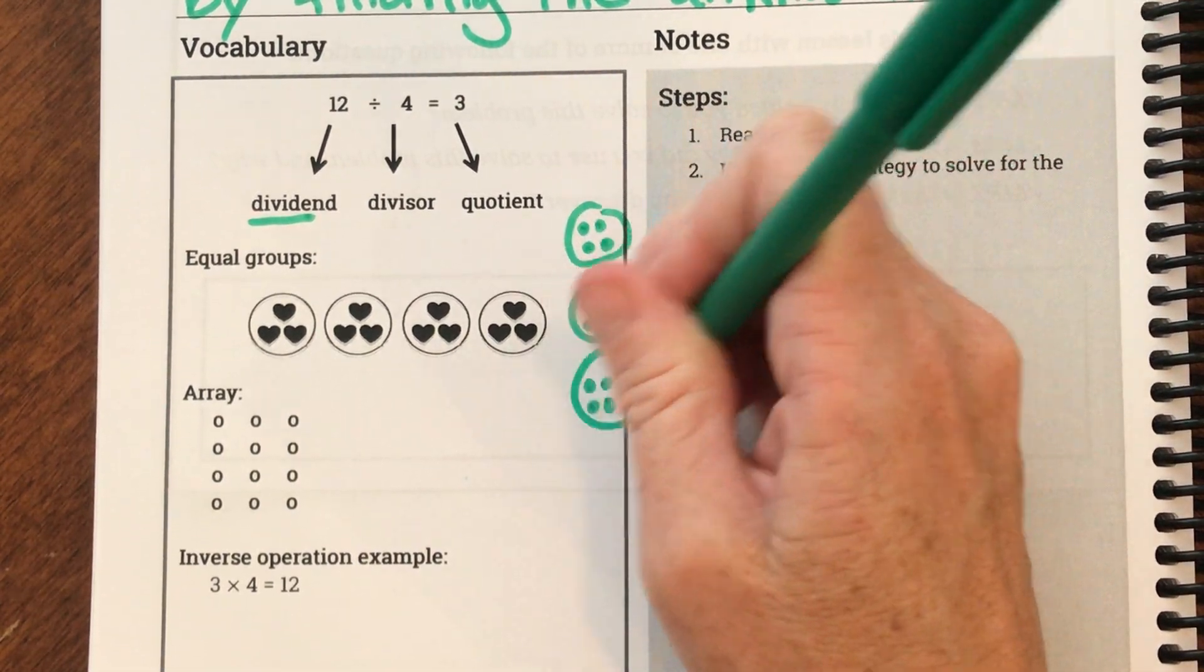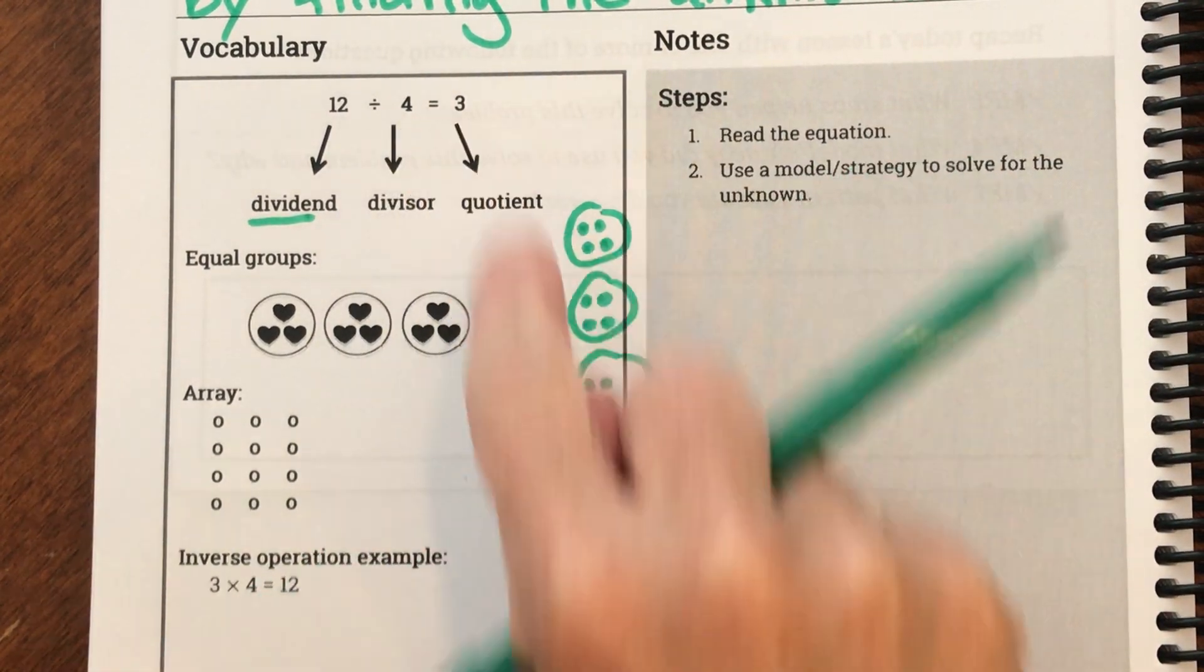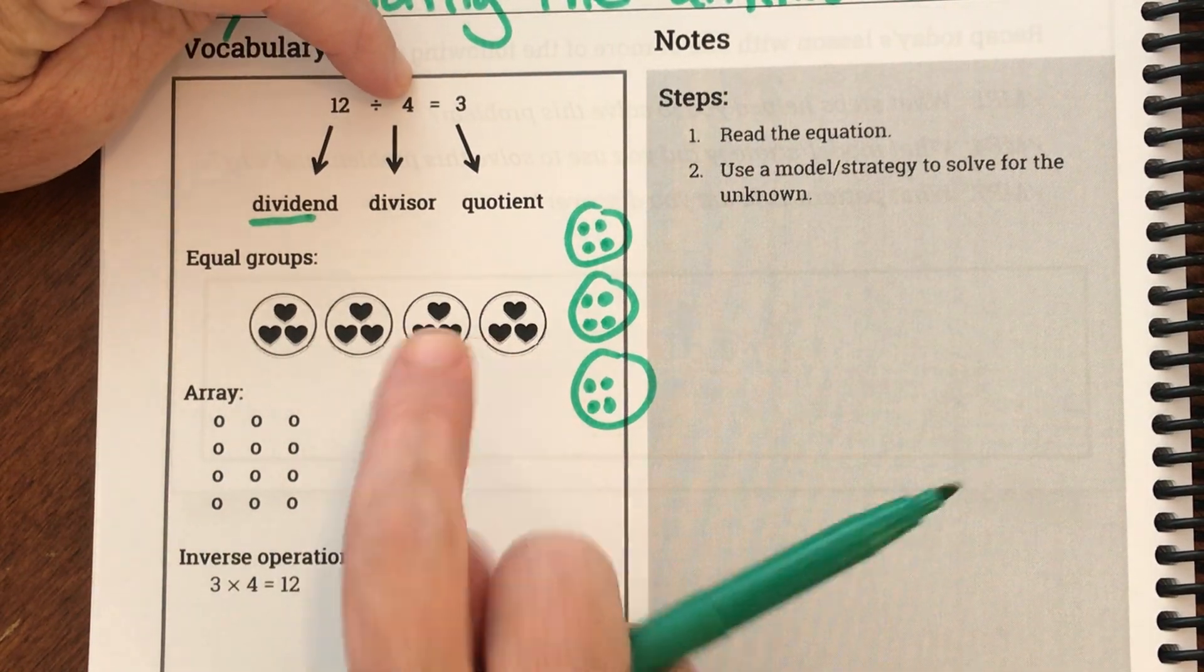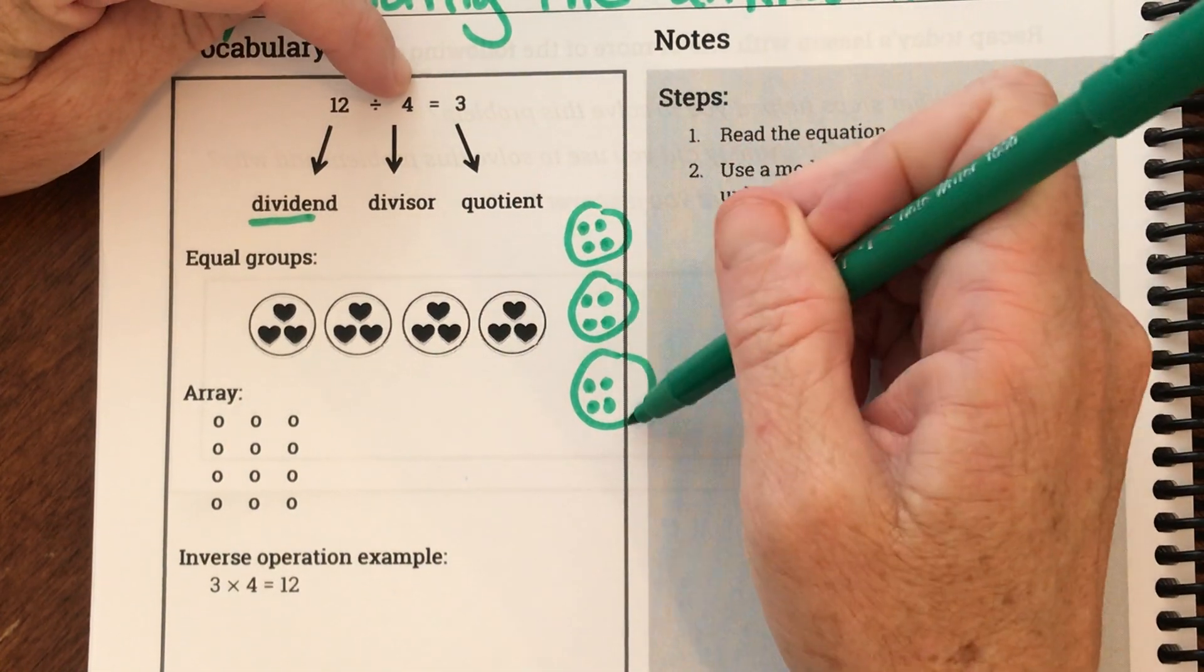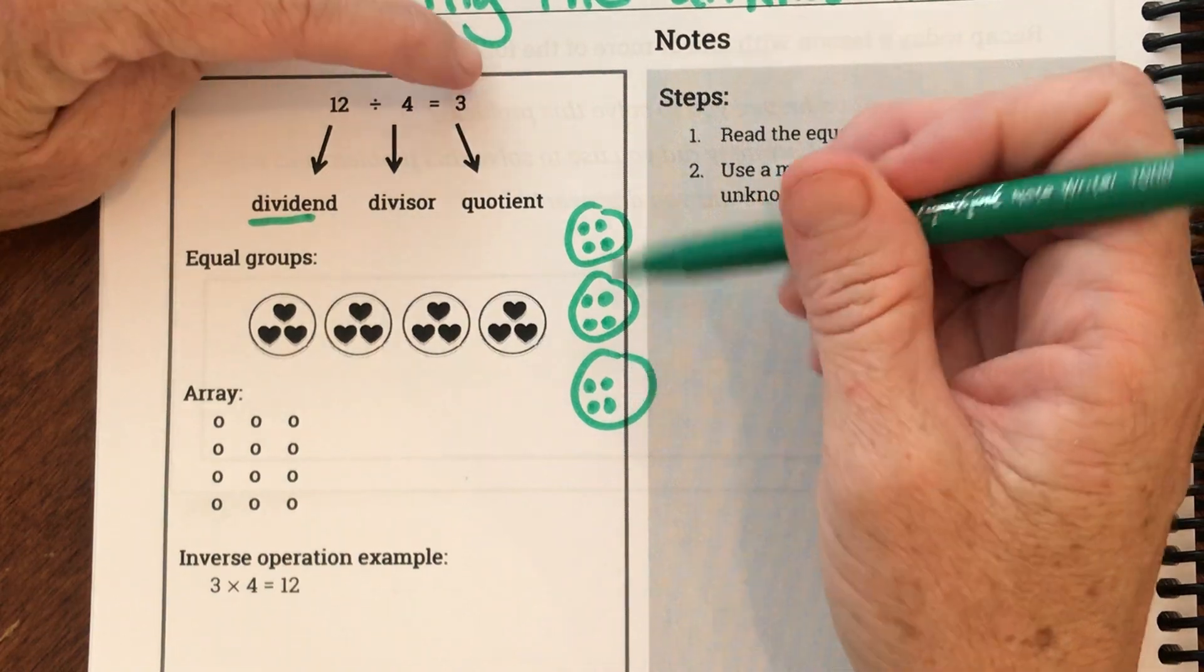So when you look at division, this could say how many groups there are—here there's four—or it could say how many are in each group.